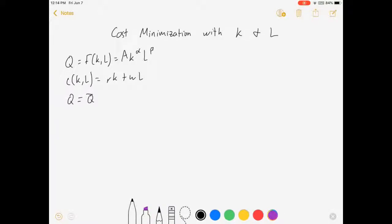So let's set it up. We're going to minimize by choosing K and L our cost function of K, L subject to that our production of K, L equals Q bar.